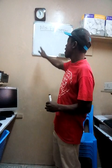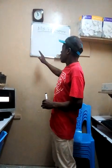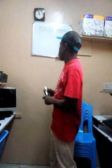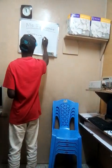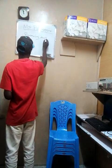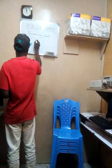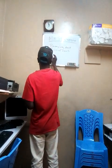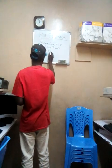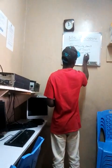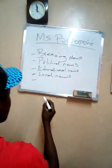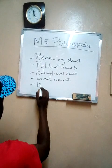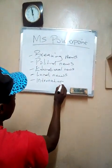When you talk about a product, a product is anything that you can offer to the customer for purchase. For example, you can talk about even the news. When you talk about the news, you have to come up with several types of news. For example, we can talk about breaking news, political news, educational news, local news, and also international news.